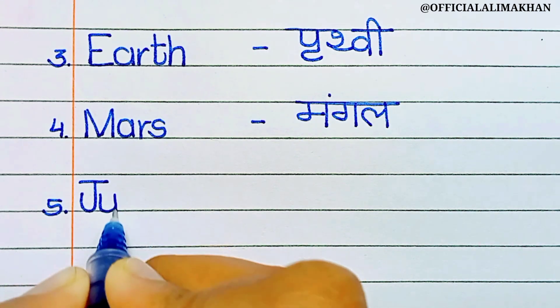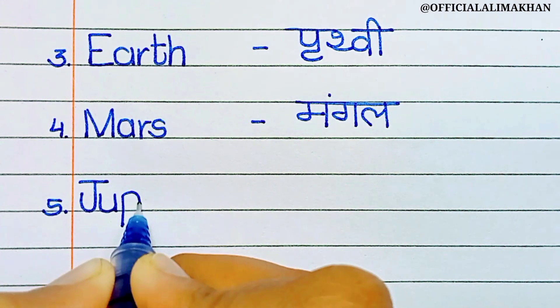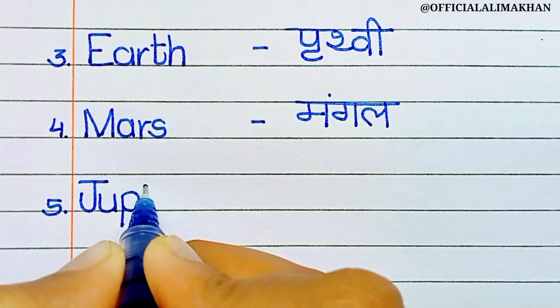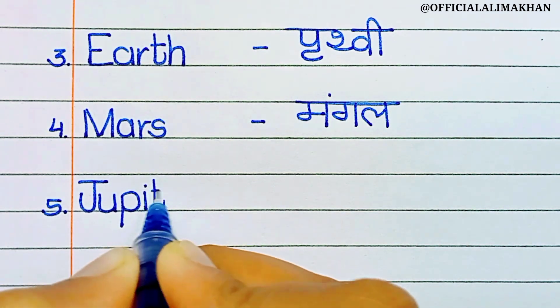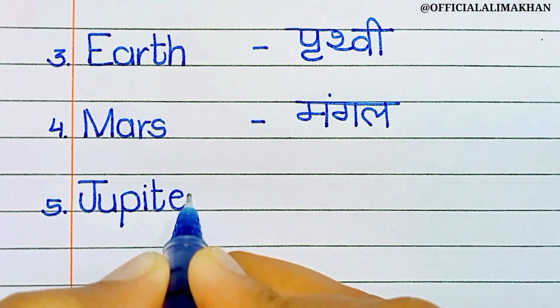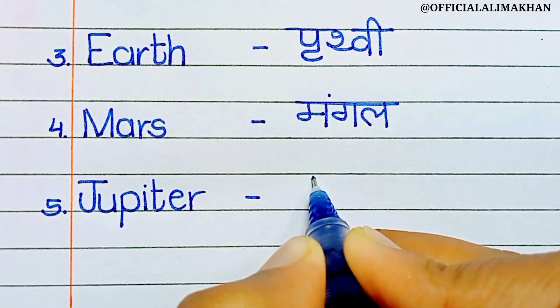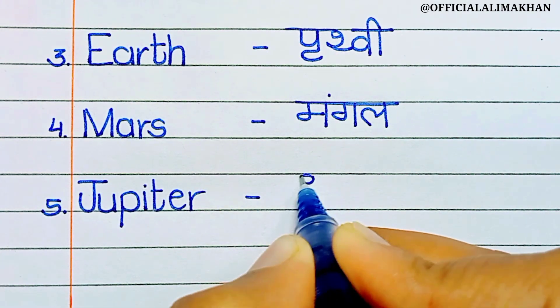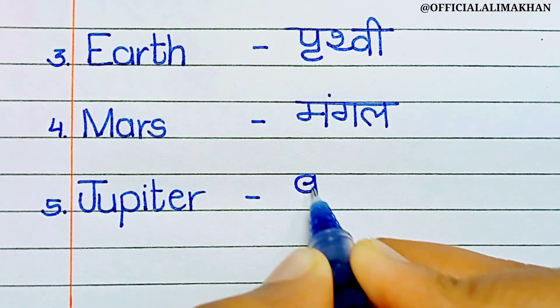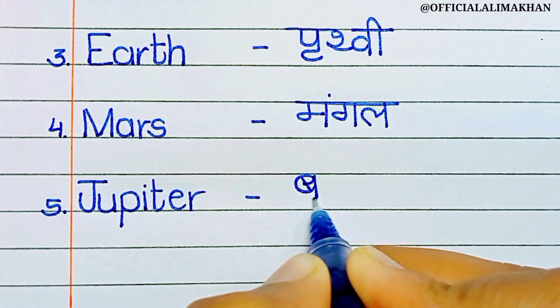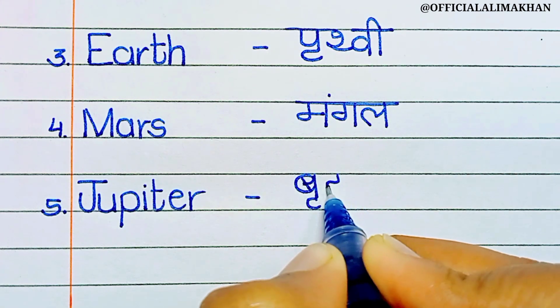Number five, Jupiter. J-U-P-I-T-E-R. Jupiter means Brihaspati.